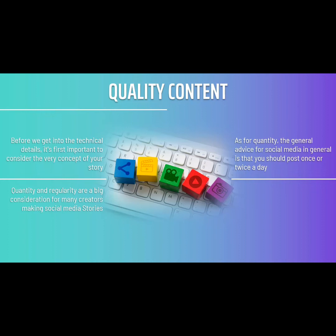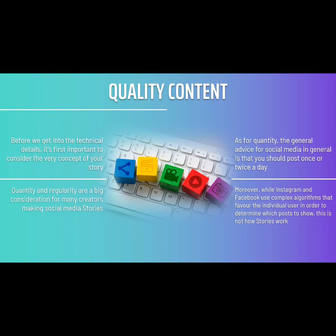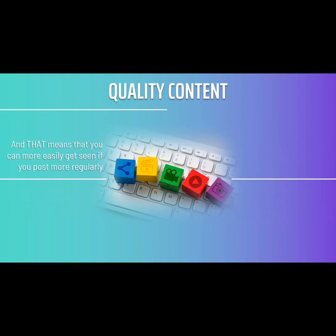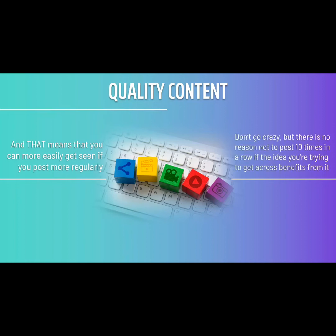The problem is that stories work differently from other posts. Whereas posts to your main feed risk clogging up users' feeds and becoming irritating, posts to your story will appear at the top of the page and not in a queue. Moreover, while Instagram and Facebook use complex algorithms that favor the individual user in order to determine which posts to show, this is not how stories work. Stories are far more weighted by chronology — meaning the most recent story is the one you will be shown first. That means you can more easily get seen if you post more regularly. Don't go crazy, but there's no reason not to post 10 times in a row if the idea you're trying to get across benefits from it.